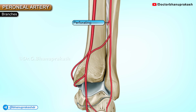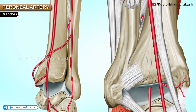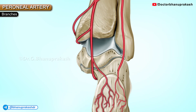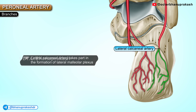The perforating branch is large and pierces the interosseous membrane, appearing in the anterior compartment of the leg, eventually terminating by anastomosing with the lateral malleolar branches of the anterior tibial and dorsalis pedis arteries. The lateral calcaneal artery is a terminal branch which takes part in the formation of the lateral malleolar plexus.